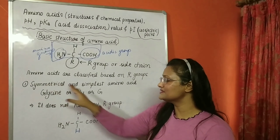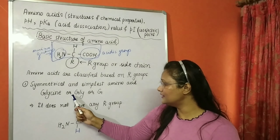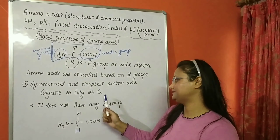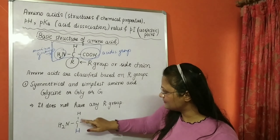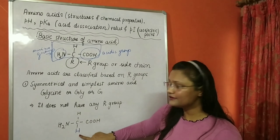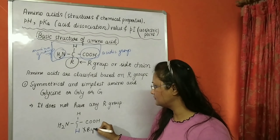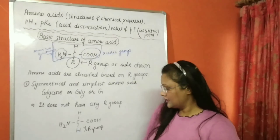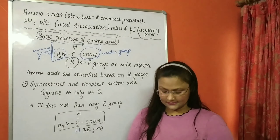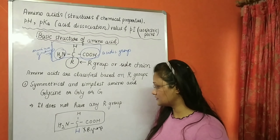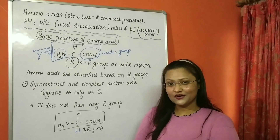The first and simplest amino acid is glycine, denoted as Gly or G. Glycine does not have any R group — instead of an R group there is an H — which is why it is symmetrical. Both substituents on the alpha carbon are H, making it the only symmetrical amino acid.